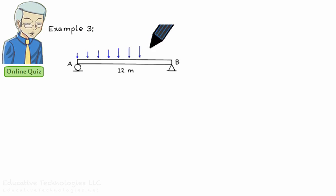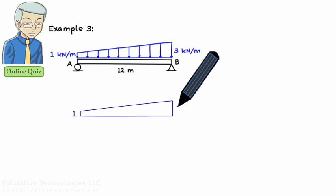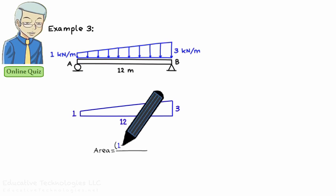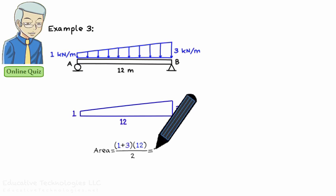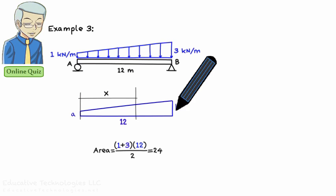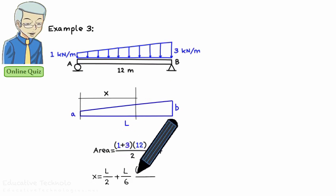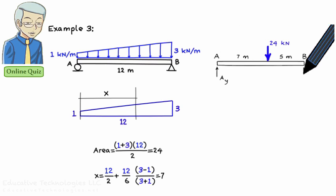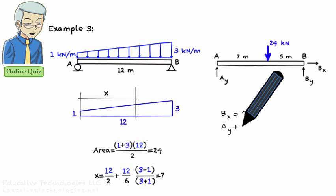Example 3: Determine the support reactions of a beam subjected to a trapezoidal load. The magnitude of the equivalent concentrated load equals the area of the trapezoid: (A + B) × L / 2 = (1 + 3) × 12 / 2 = 24 kN. The location of the equivalent concentrated load is the geometric center, given by X = L/2 + (L/6) × (B − A)/(B + A). With L = 12, A = 1, B = 3, we get X = 7 meters from the left end. The free body diagram with the equivalent concentrated load is then used to write and solve the equilibrium equations.